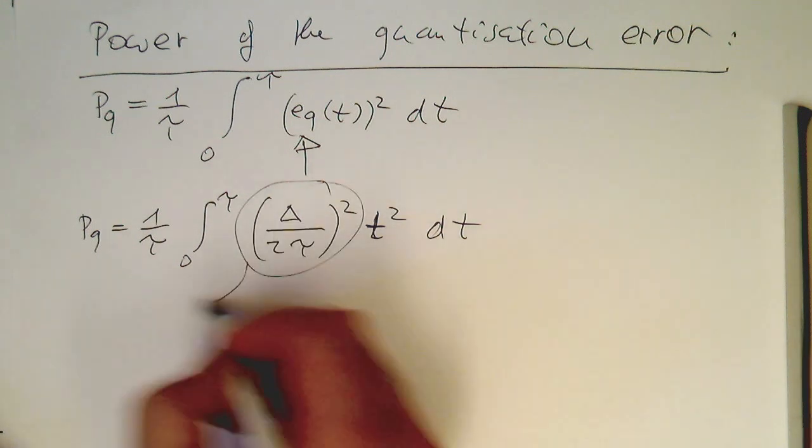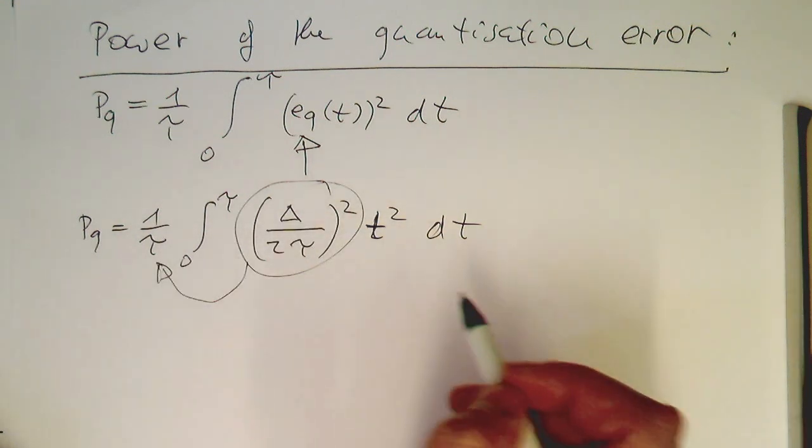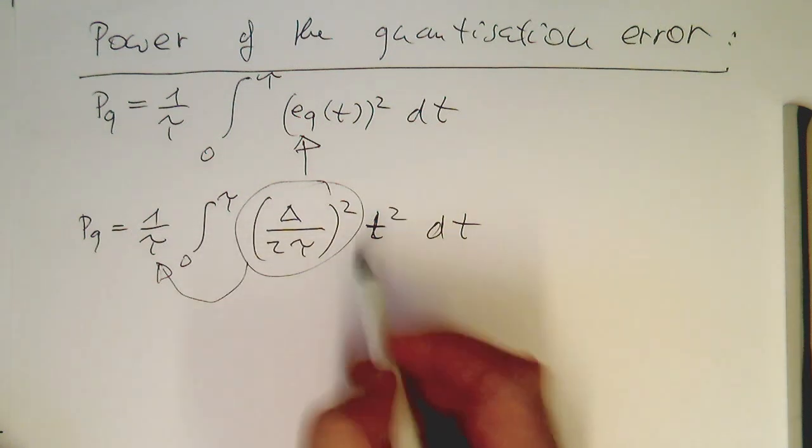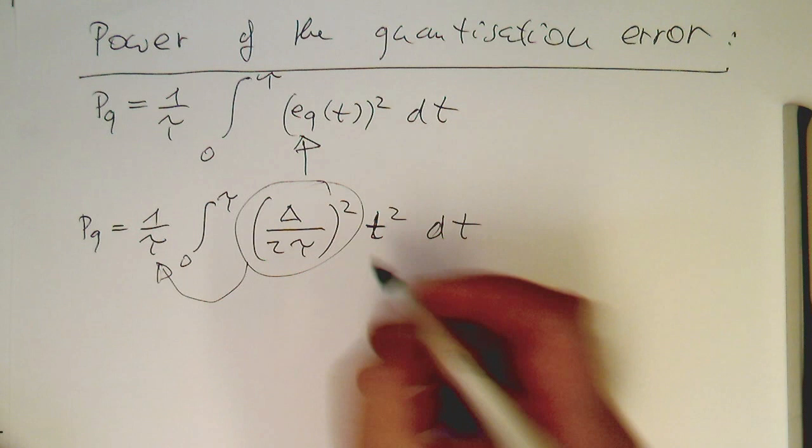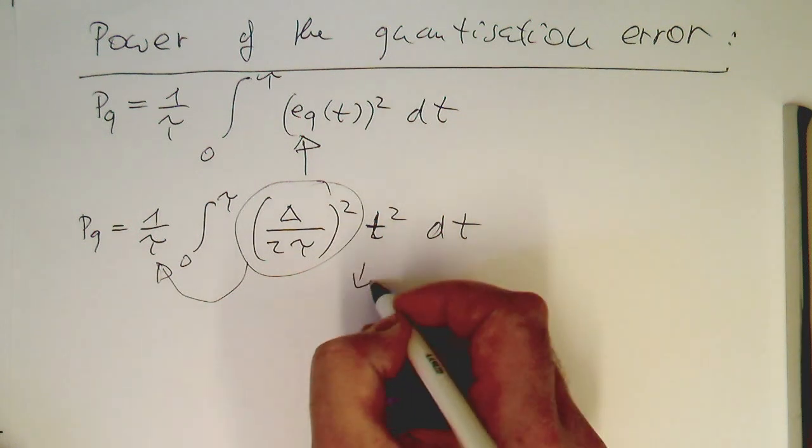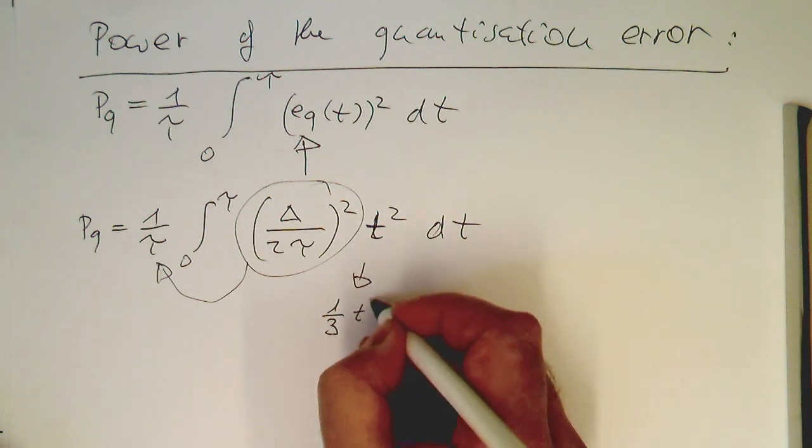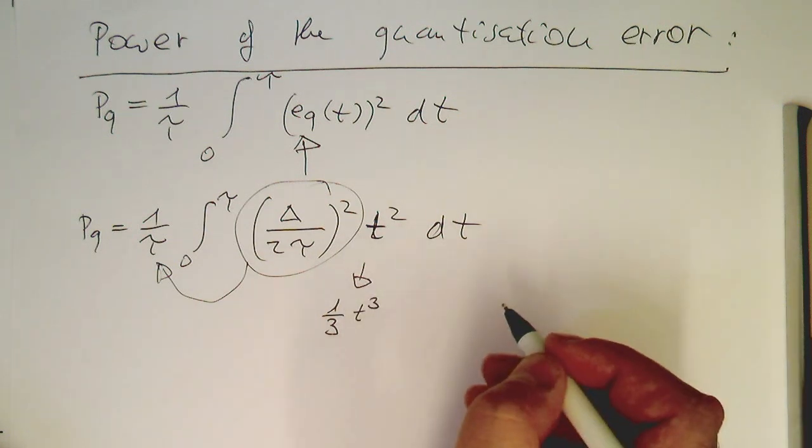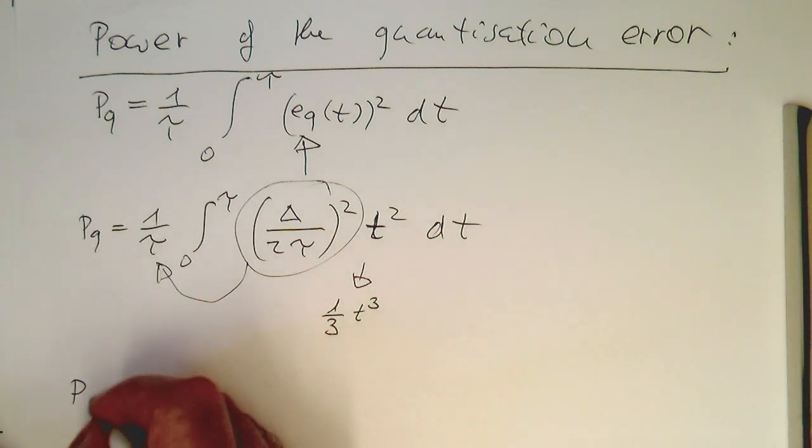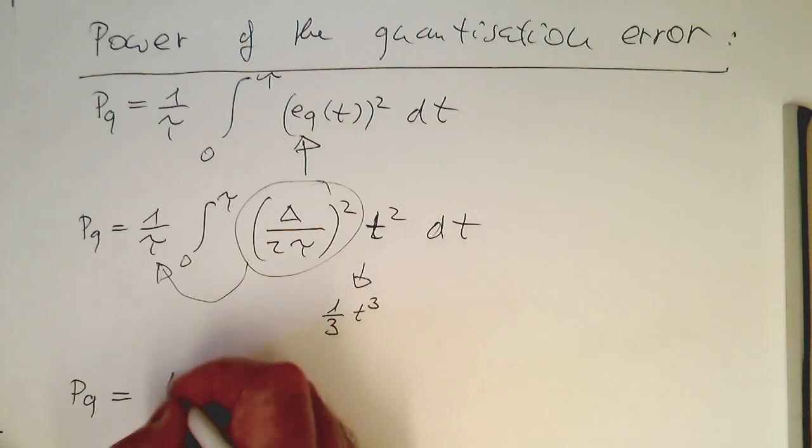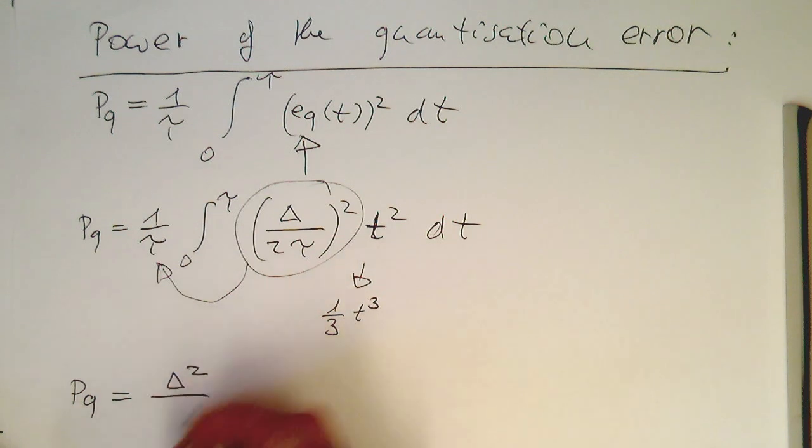They're all constants so we can just move them to the front. We just need to deal with this integral. The integral of t squared gives us one-third and then t cubed as a result.